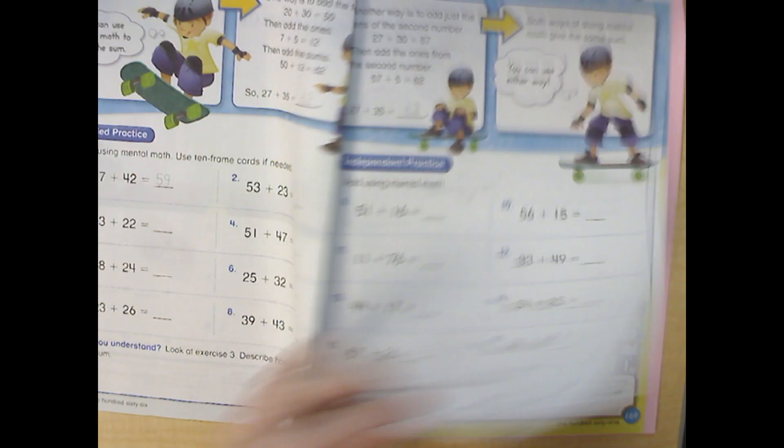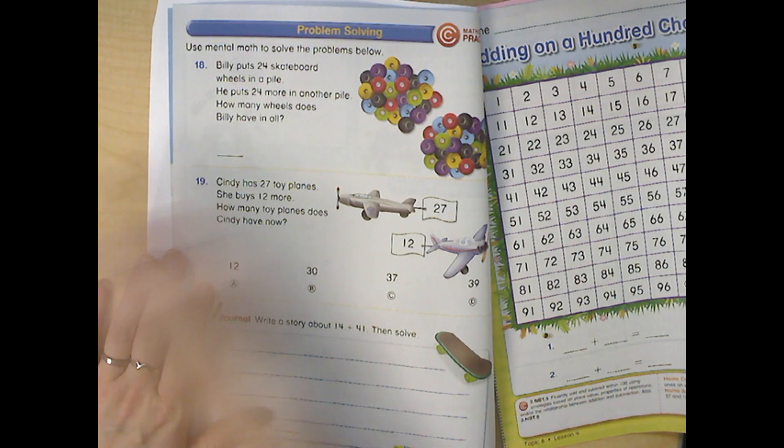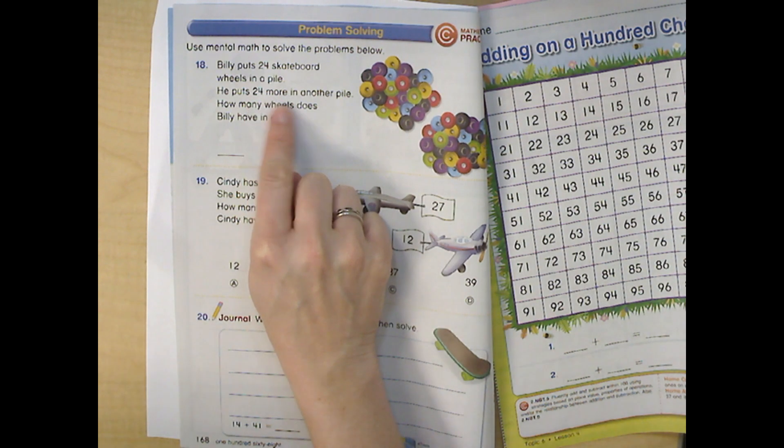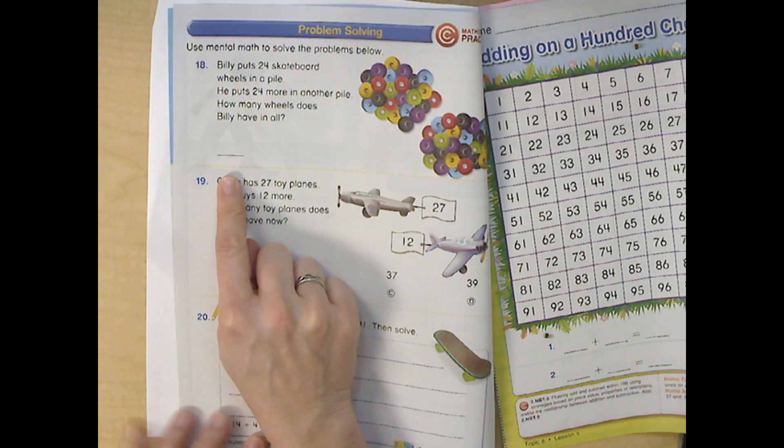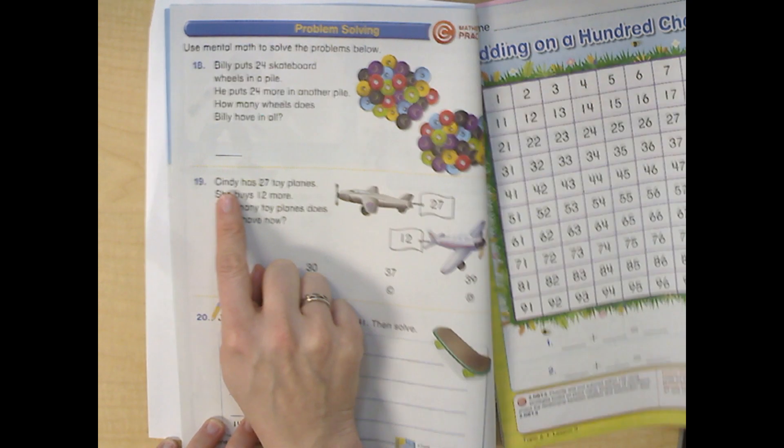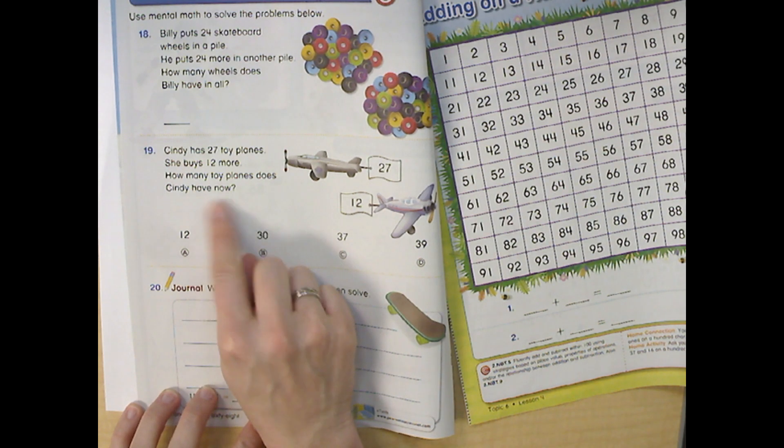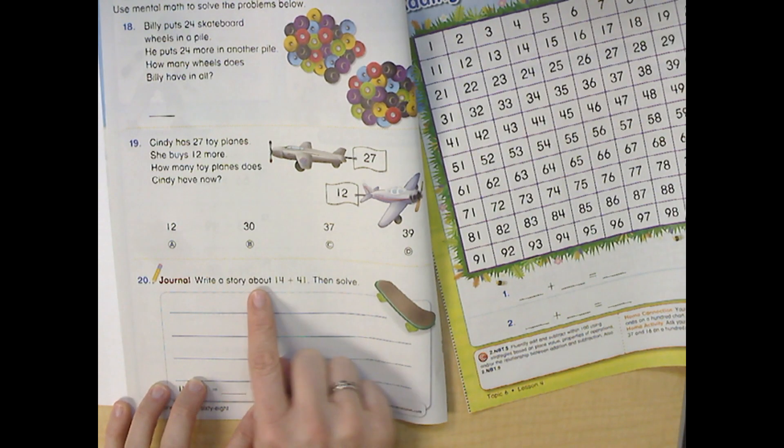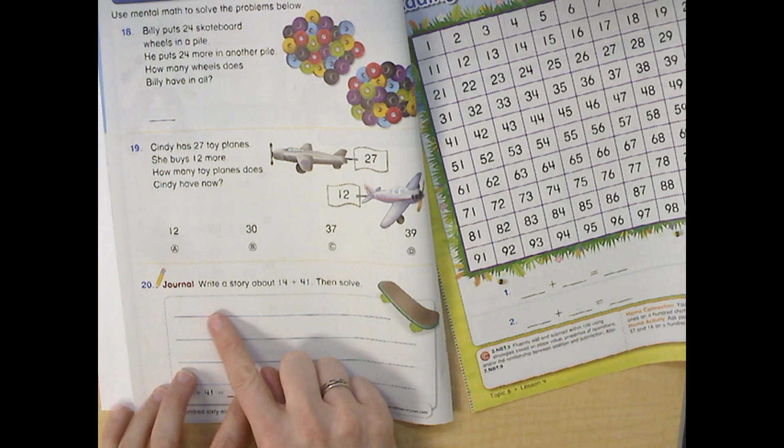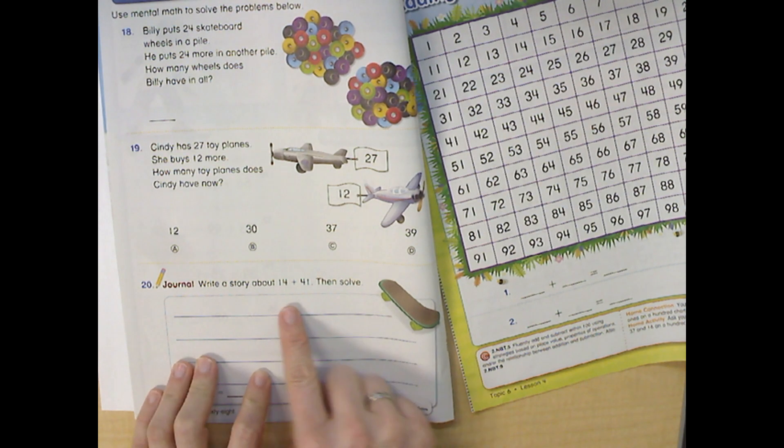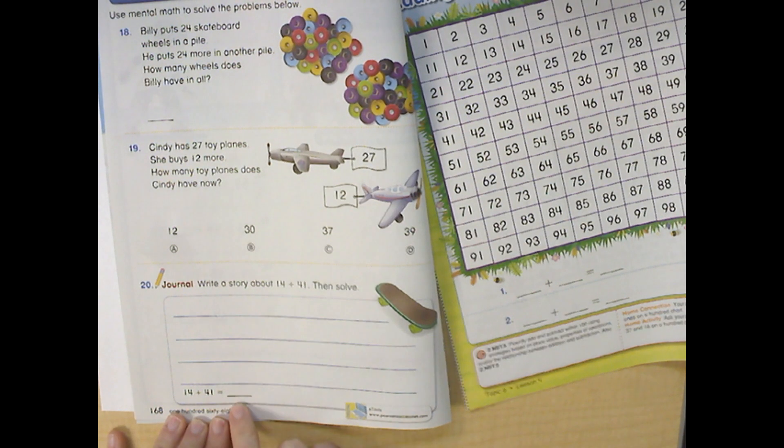Then you're going to turn to the last page. Billy puts 24 skateboard wheels in a pile. He puts 24 more in another pile. How many wheels does Billy have in all? You'll write the answer there. Cindy has 27 toy planes. She buys 12 more. How many toy planes does Cindy have now? And you'll write your answer. Write a story about 14 plus 41, then solve. For example, I saw 14 people skateboarding. 41 more people came to skateboard. How many people were skateboarding in all? And then I'd write the answer.